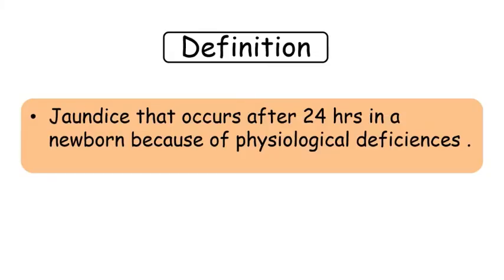First of all, what is physiological jaundice? Jaundice that occurs after 24 hours of birth and within 72 hours of birth in a newborn, because of physiological deficiencies of a newborn, is termed as physiological jaundice. Any kind of physiological change can lead to development of jaundice in a baby. These changes are corrected with time and there is no gross pathology behind.